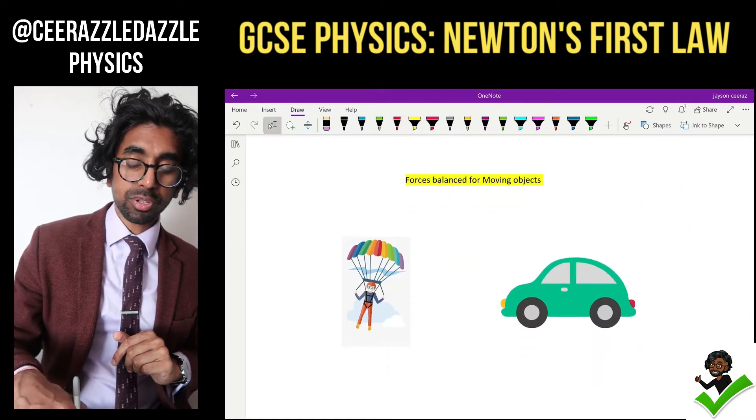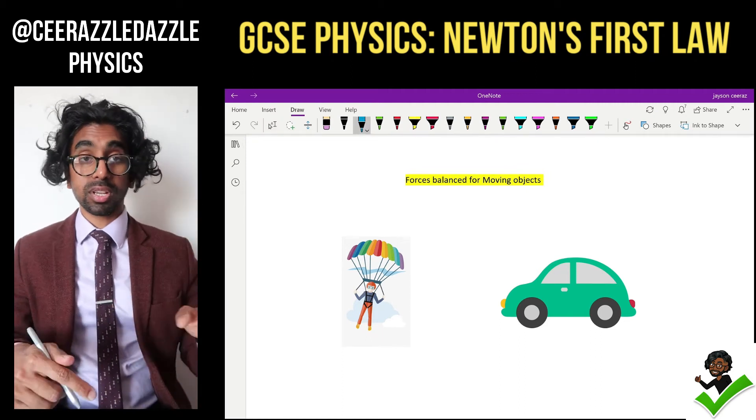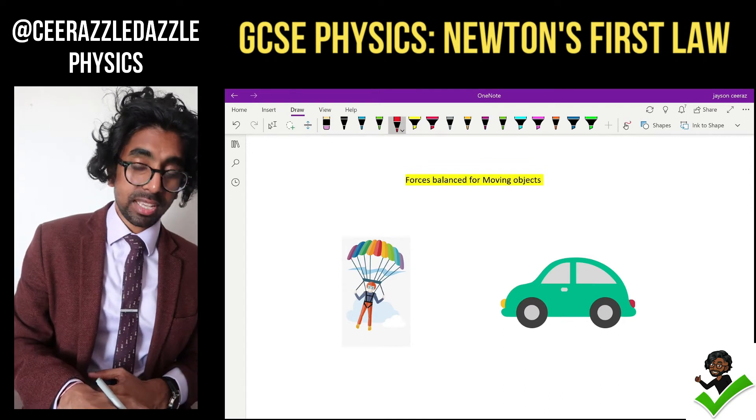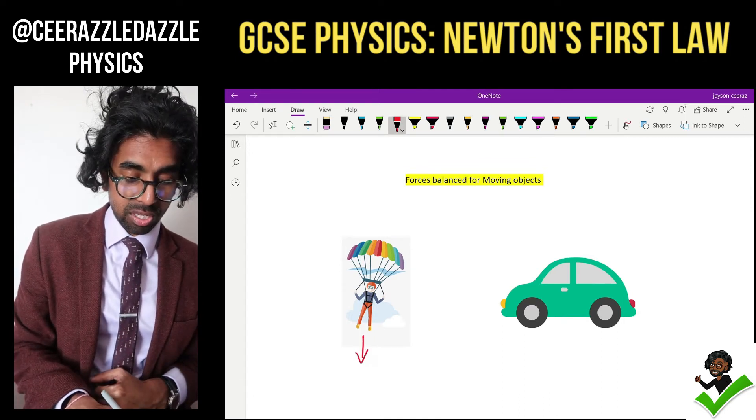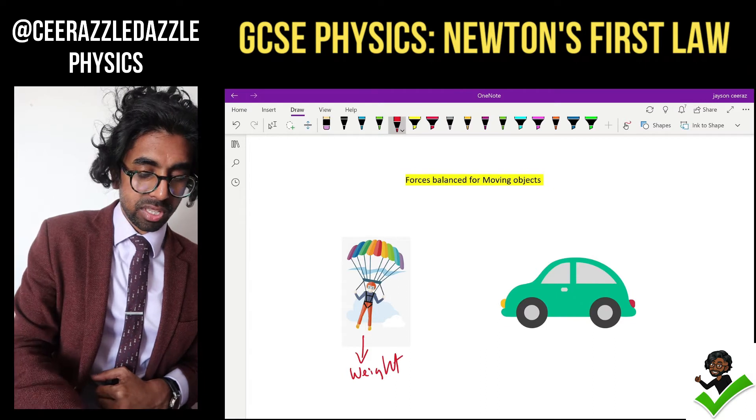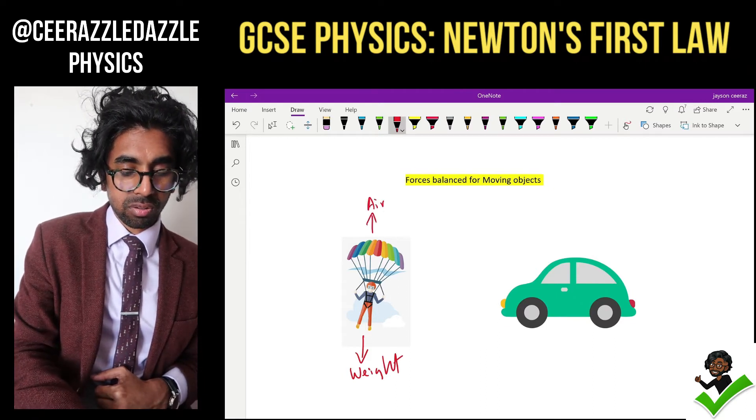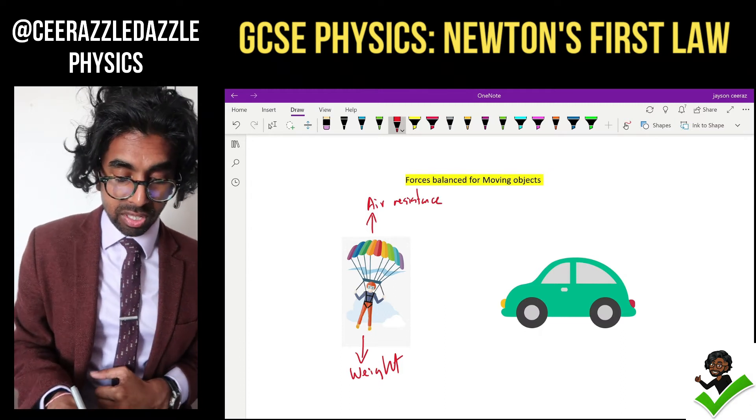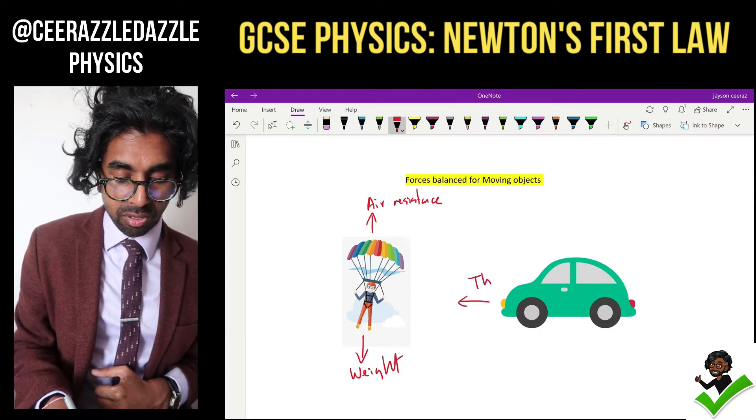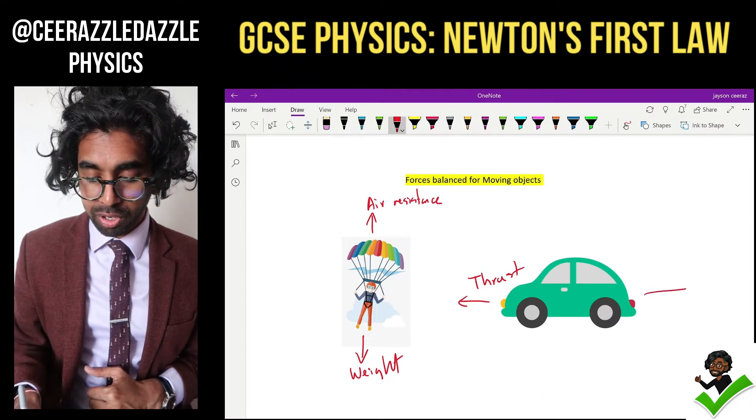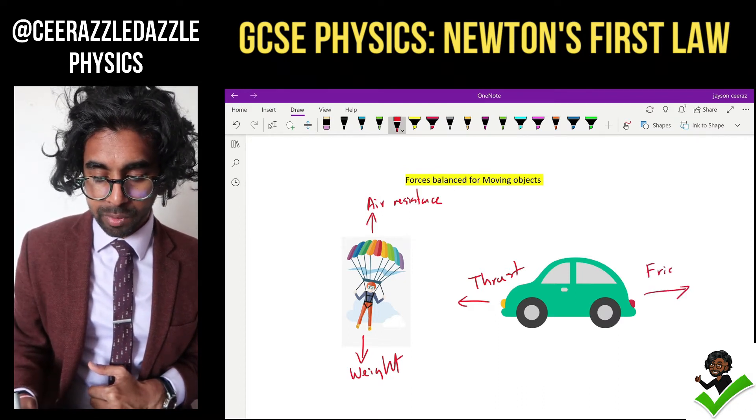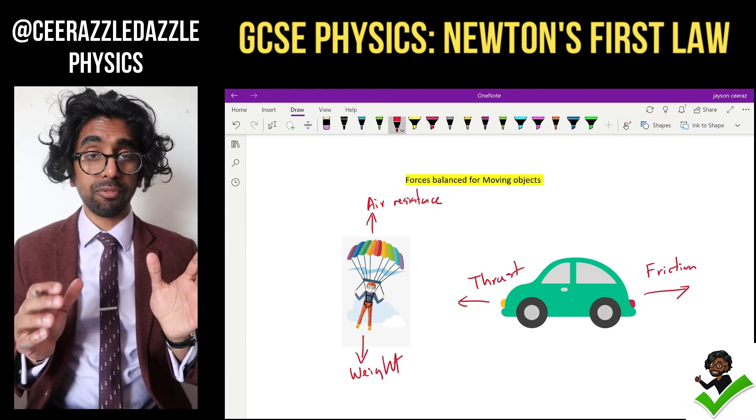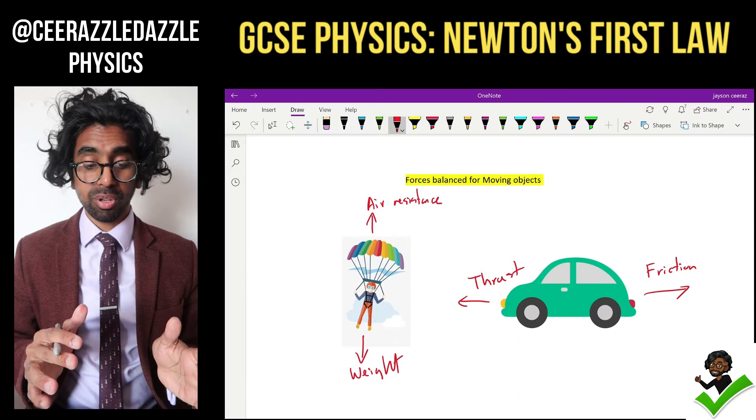So forces balance for moving objects. In this one we've got a skydiver who jumps out of a plane and we've got a car on a road here. Let's label the forces. Downwards is the weight and upwards is the air resistance. The car is moving in this direction, so here is the thrust, and moving back is the friction. We can clearly see that for these examples, the forces are balanced but it is still moving.